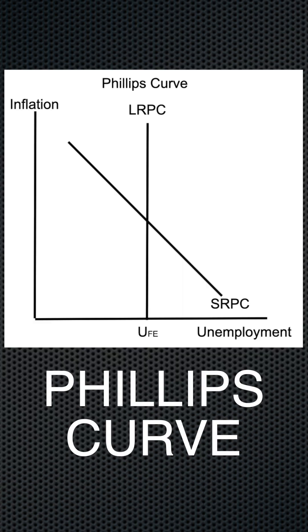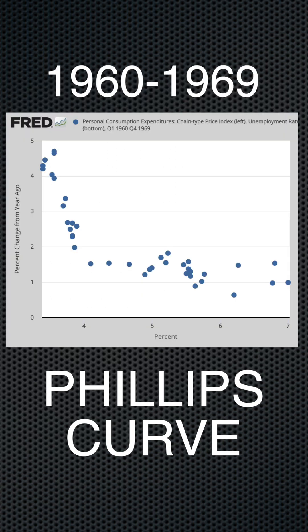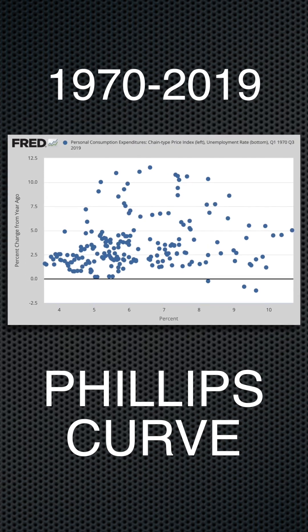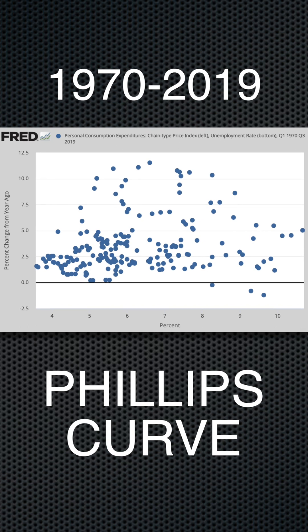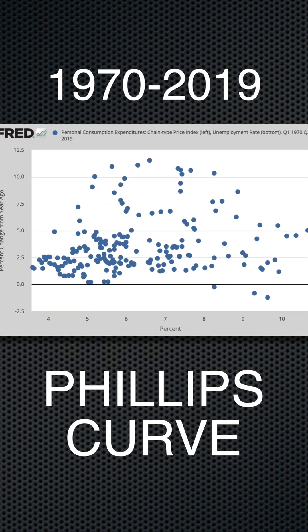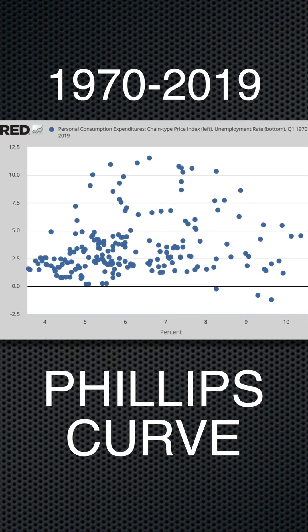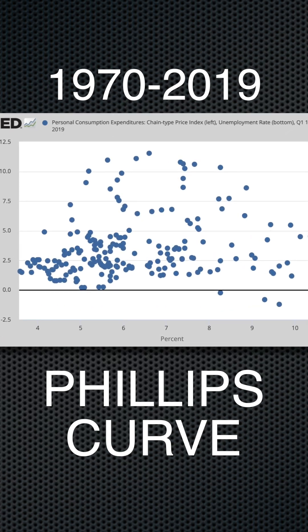The Phillips curve was developed in the late 1950s, and for a while it was pretty accurate. The real world economy did show a negative relationship between inflation and unemployment. But starting in the 1970s, it lost a little bit of its predictability and didn't really show what's going on with the real world economy.